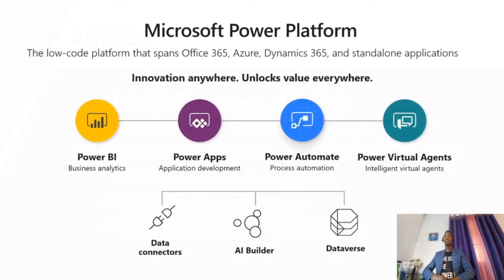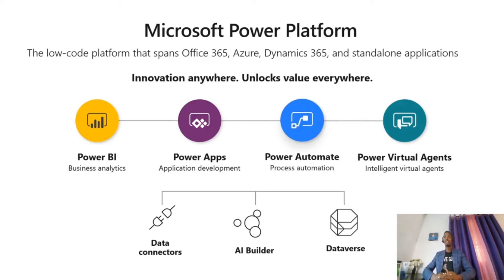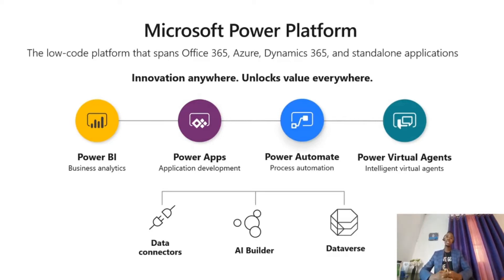Microsoft Power Platform consists of four major products: Power BI, Power Apps, Power Automate, and Power Virtual Agent. These are low-code platforms that span Office 365, Azure, Dynamics 365, and some standalone applications. Power BI is for business analytics — you use it to get different insights from your data.